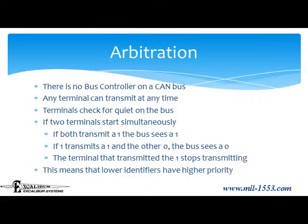One of the basic issues every bus must deal with is coordinating transmission of all the nodes on the bus — how do you make sure two devices don't try to transmit simultaneously? CAN deals with this by having every device read its own transmission. If two nodes simultaneously transmit a zero, they will both read back a zero. Similarly, if they both transmit a one, they will both read back a one. However, if one transmits a zero and another transmits a one, they will both read back a zero. At this point, the device that transmitted a one stops transmitting and waits until the bus is clear before it tries again. This is why identifiers with more leading zeros have a higher priority than identifiers with fewer leading zeros.